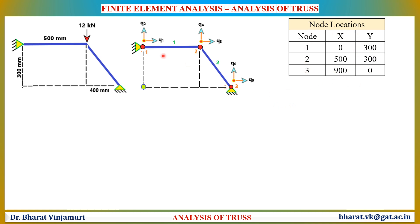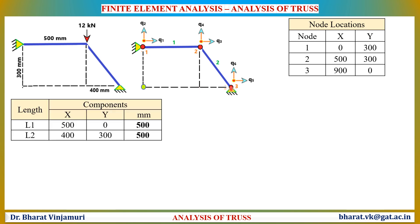After finding the node locations, we determine the length of the elements. The length of element 1 is directly given as 500 mm. The length of element 2 is determined by applying the Pythagorean theorem: √(400² + 300²), which gives the same length as element 1, i.e., 500 mm.